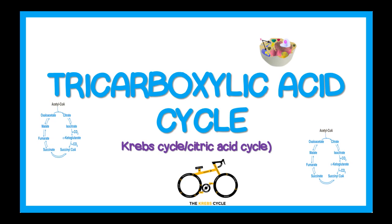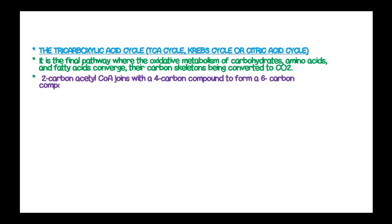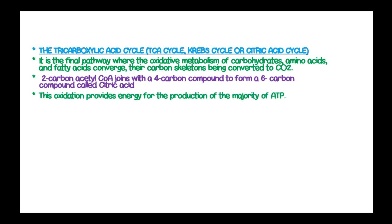Tricarboxylic Acid Cycle. This cycle is the final pathway where the oxidative metabolism of carbohydrates, amino acids, and fatty acids converge. Their carbon skeletons are being converted to carbon dioxide. Two-carbon acetyl-coenzyme A joins with four-carbon compounds to form six-carbon compounds known as citric acid, and this oxidation provides energy for the production of the majority of adenosine triphosphate.